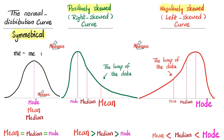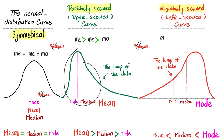I've told you about a cool mnemonic to help you memorize this — it goes like this: 'me, me, mo.' If your curve is symmetrical, then the mean equals the median equals the mode. For a positively skewed curve, me is greater than me is greater than mo, meaning the mean is greater than the median, which is greater than the mode. And if it's a negatively skewed curve, you put less than instead of greater than, so the mean is less than the median, which is less than the mode.